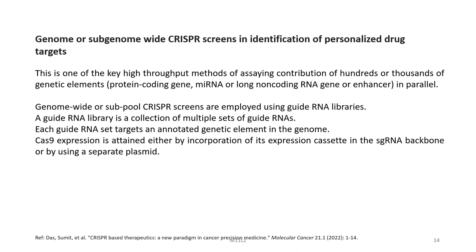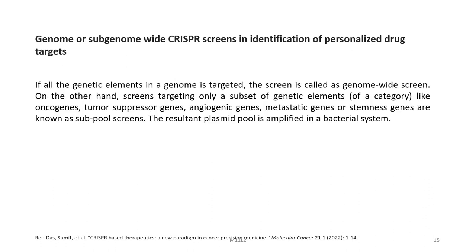Genome-wide or sub-pool CRISPR screens are one of the key high-throughput methods of assaying contributions of hundreds or thousands of genetic elements in parallel, employing guide RNA libraries. A guide RNA library is a collection of multiple sets of guide RNAs, each targeting an annotated genetic element in the genome. Cas9 expression is obtained either by incorporation of its expression cassette in the sgRNA backbone or by using a separate plasmid. If all genetic elements in a genome are targeted, the screen is called a genome-wide screen.